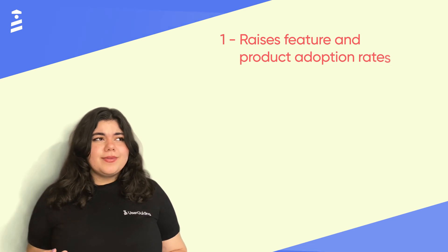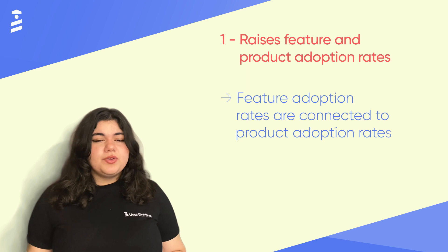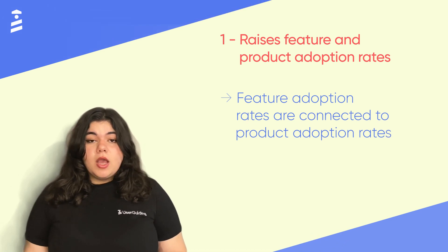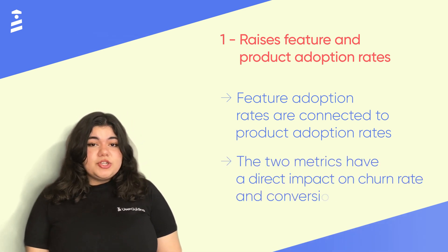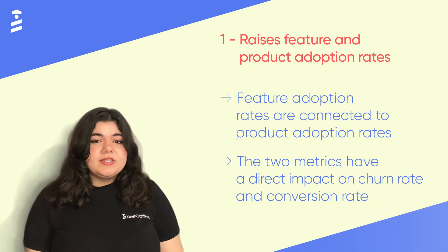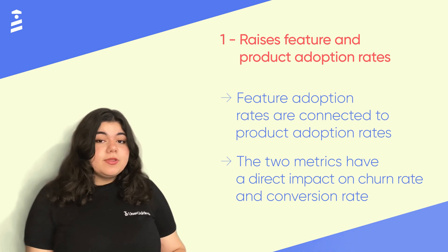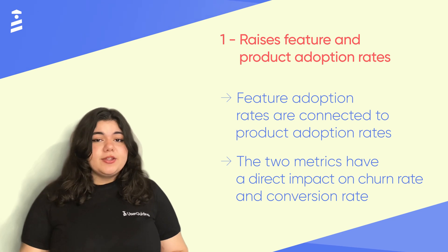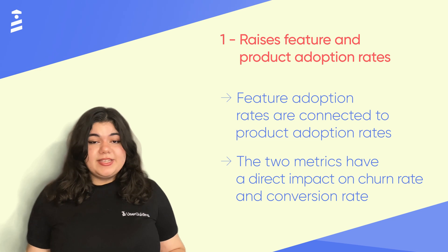If you don't tell a user that you have a new feature, the chances of them finding out about it are pretty slim. What you want to do is nudge them a little so that they see the new feature, which will naturally increase the new feature adoption rate, which will then increase your product adoption rate — directly intertwined with your retention and churn rates. So basically, new feature onboarding is your best friend in fighting churn.